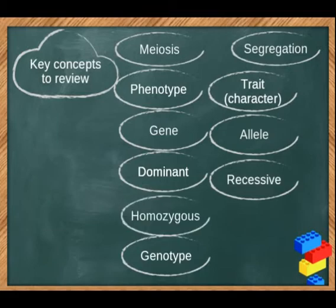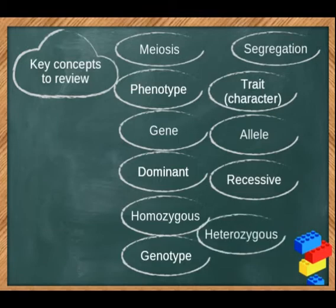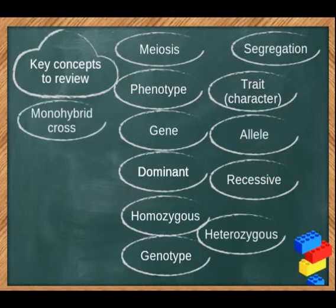The genotype may be homozygous or heterozygous. If it's homozygous, both alleles are the same — they can be homozygous dominant or homozygous recessive. If it's heterozygous, that means it has one dominant allele and one recessive allele. Simple.